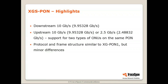Now XGS-PON is quite similar to XG-PON 1 — I'll talk about the history of how XGS-PON was born shortly. The main difference is that XGS-PON is symmetrical: 10G down and 10G up, but the upstream also supports XG-PON 1 ONUs, meaning the upstream can also be 2.5G. So it supports two types of ONUs on the same PON — each ONU will be either 10G or 2.5G, and the OLT supports both. The protocol and frame structure are very similar to XG-PON 1, with minor differences, and it is compatible with XG-PON 1 ONUs connecting to XGS-PON OLTs.